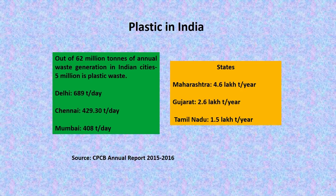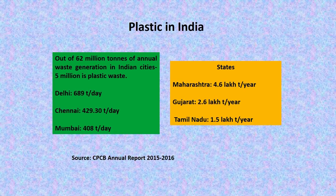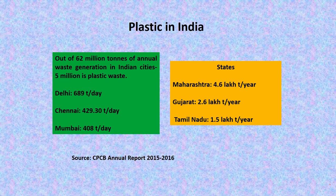As far as the plastic scenario in India is concerned, out of 62 million tons of waste generated in Indian cities per year, plastic accounts for 5 million tons. The city of Delhi produces 689 tons of plastic per day, followed by Chennai at 429.3 tons per day and Mumbai at 408 tons per day. The state of Maharashtra produces 4.6 lakh tons (0.46 million tons) per year.